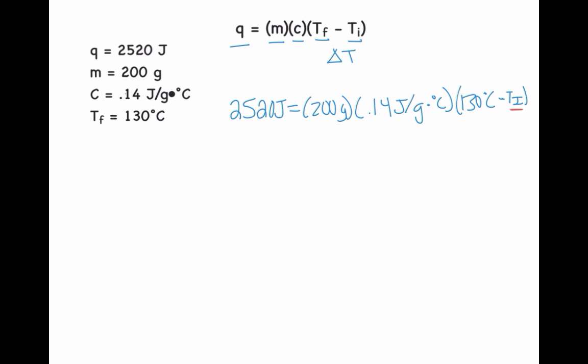The next step that I'm going to do is the distributive property. So I'm going to re-write my heat, 2,520 joules, and then I'm going to multiply together the 200, the 0.14, and the 130. And when I do that, through the distributive property, I should get 3,640 minus,